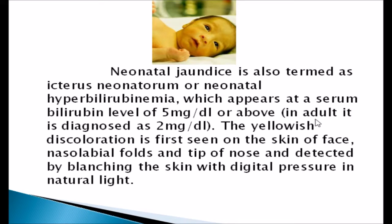The yellowish discoloration is first seen on the skin of the face, then on the nasolabial folds, the tip of the nose, and is detected simply by blanching the skin with digital pressure in natural light. If you press the skin with your fingers in natural light you can see the yellowish discoloration, and it is detected as jaundice by this method.